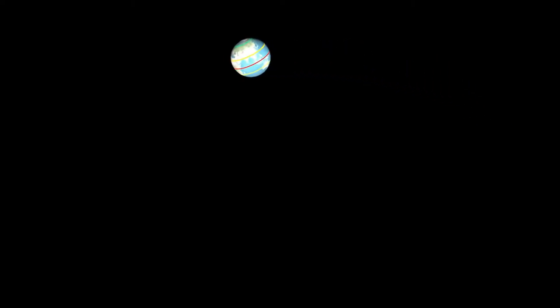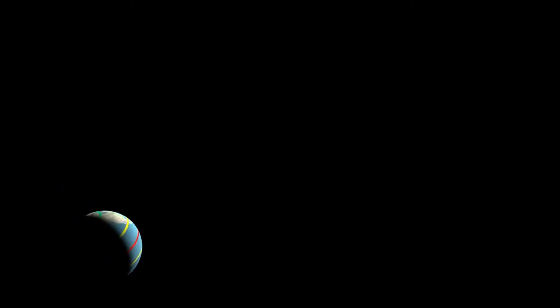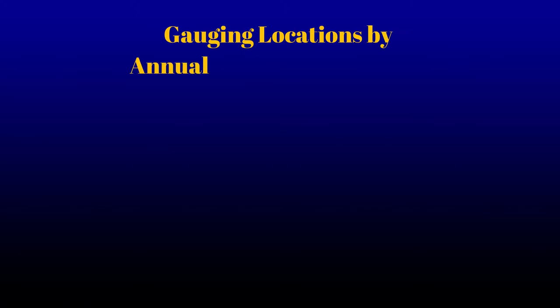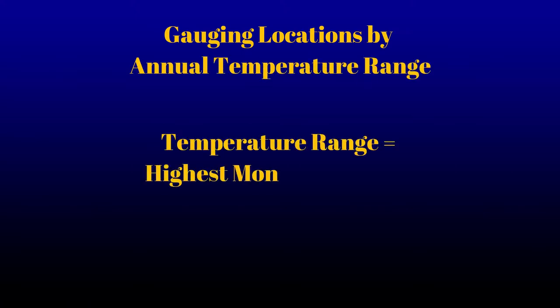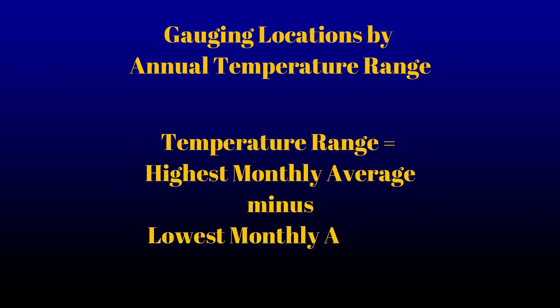The annual cycle of temperatures is related to the Earth's revolution around the Sun, its tilt on its axis, latitude, and energy transfer. Gauging locations by their annual temperature ranges means taking their highest monthly average minus their coldest monthly average. Here are some examples by latitude.